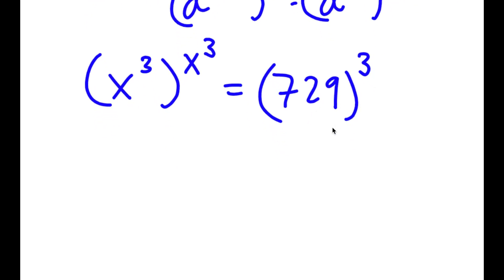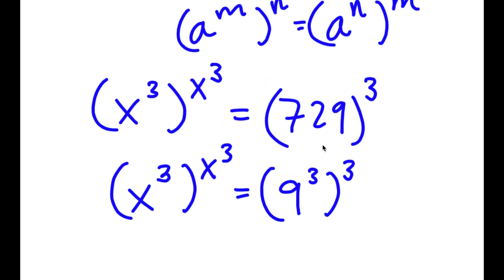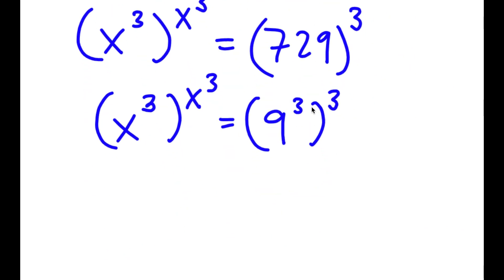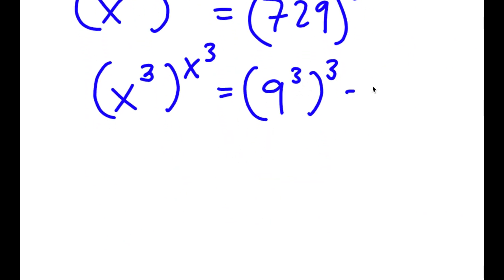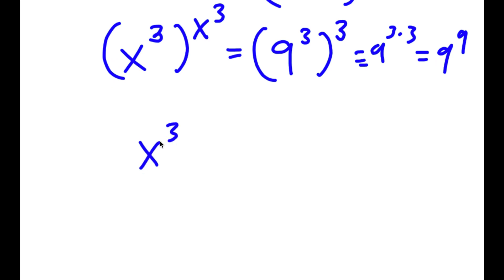Now, 729 is the same thing as 9 to the power of 3. So now I have x to the power of 3 to the power of x to the power of 3 is equal to 9 to the power of 3 to the power of 3. And 9 to the power of 3 to the power of 3 equals 9 to the power of 3 times 3, which equals 9 to the power of 9. So now I have x to the power of 3 to the power of x to the power of 3 is equal to 9 to the power of 9.